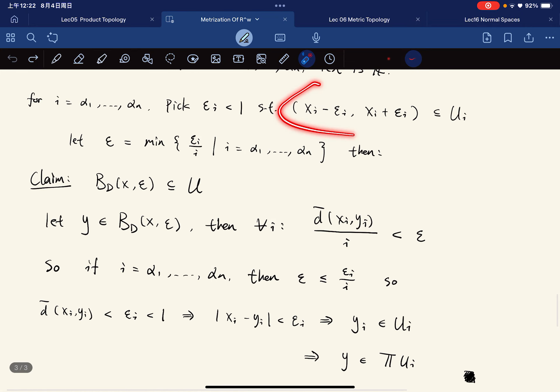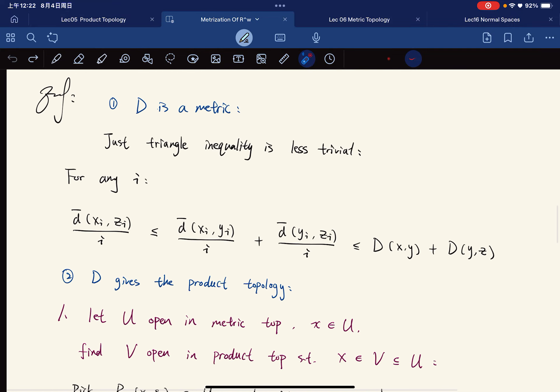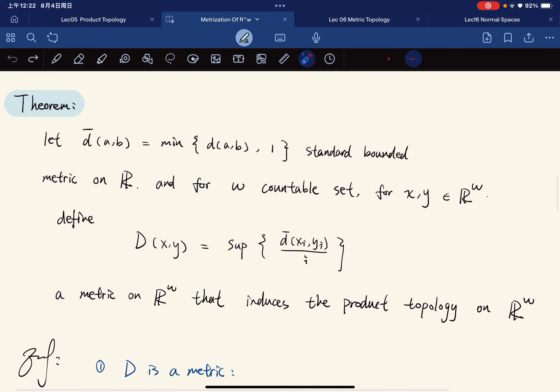And remember, we have this. So y is in the Uᵢ's. So we're done. So we just showed that the countable product of R is metrizable. And that's a beautiful result. So I'll see you guys next time.